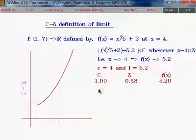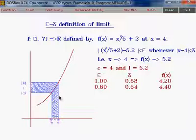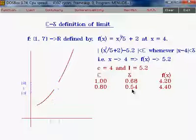Decrease the value of epsilon, and for this decreased value of epsilon, the corresponding delta neighborhood of C gives the value of delta 0.54.